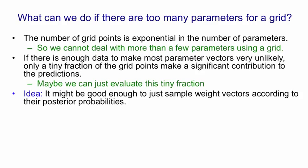An idea that makes Bayesian learning feasible is that it might be good enough just to sample weight vectors according to their posterior probabilities.